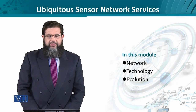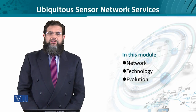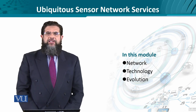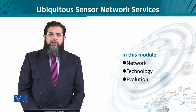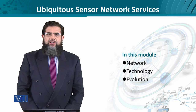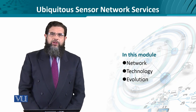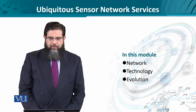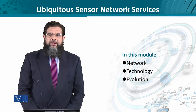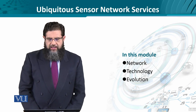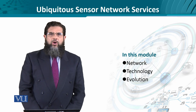We are going to look at ubiquitous sensor network services. 'Ubiquitous' is a Latin word, 'ubiquité', which means everywhere. These are services which are sometimes provisioned through web services architecture and sometimes through other proprietary means. It is a very diverse and broad field. Normally referred to as wireless sensor networks, but in the context of NGN, these are known as USN services.